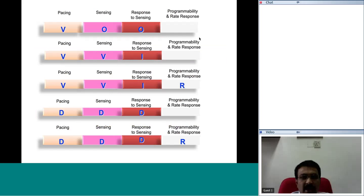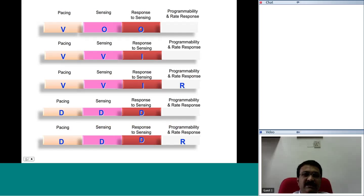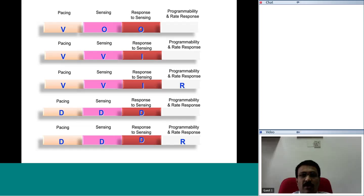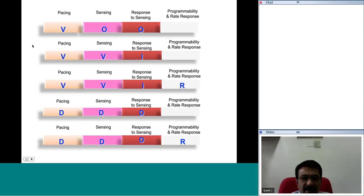For example, in a common clinical scenario, if the NBG code says the pacemaker is VOO — the first letter V says the lead is used to pace the ventricle. The first letter tells which chamber is being paced, so V represents the ventricle is paced. The second letter represents what the lead does with respect to sensing. If it doesn't have sensing capability, then it is called O. So this is VOO — the third letter also being O means no response to sensing.